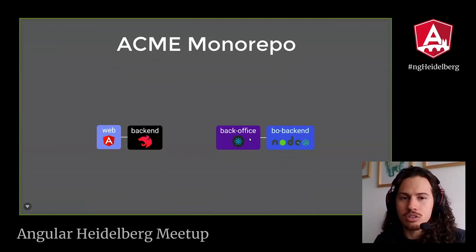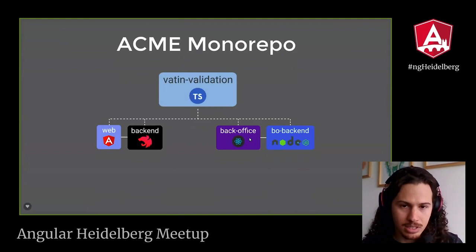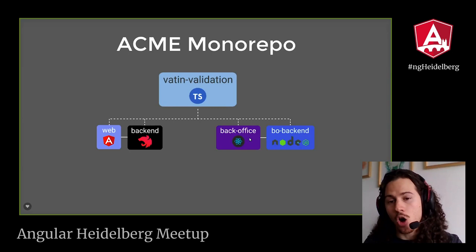So if we refactor our organization or startup to a Monorepo, it would look something like this. We are going to have all four applications in a single repository. We create a library and import it — so each time we change something in that library, all the applications that use it are going to have that change right away.